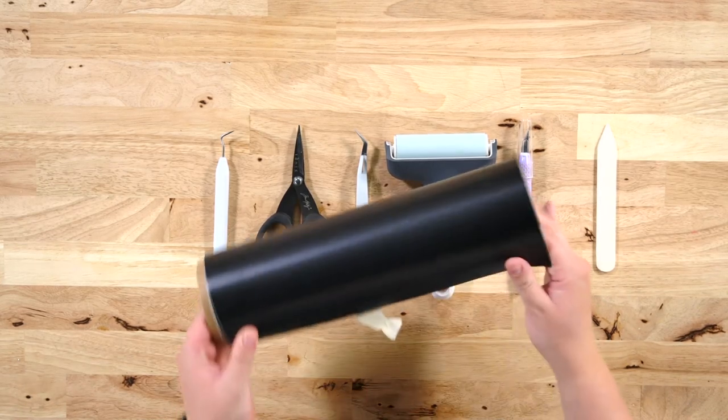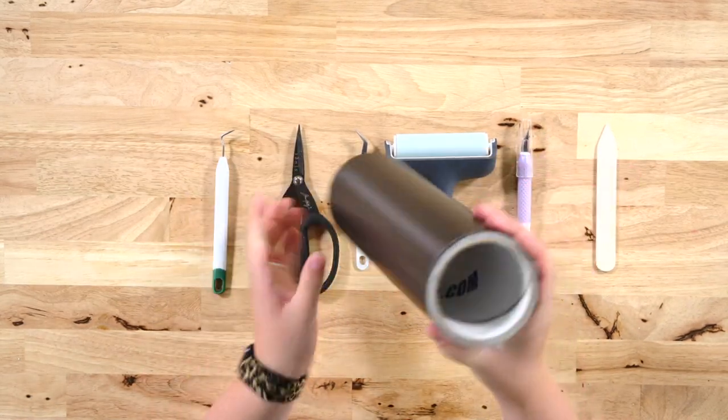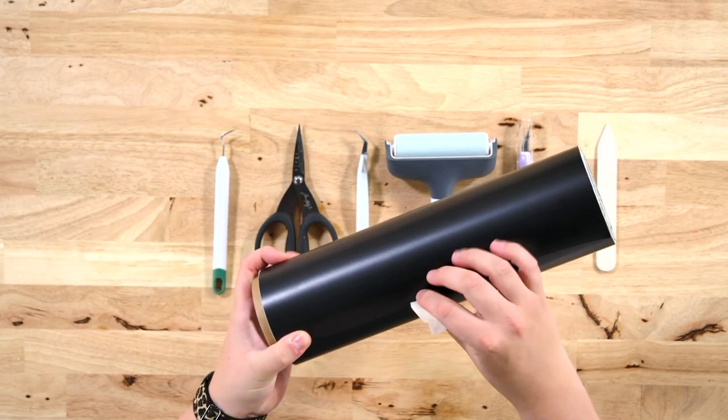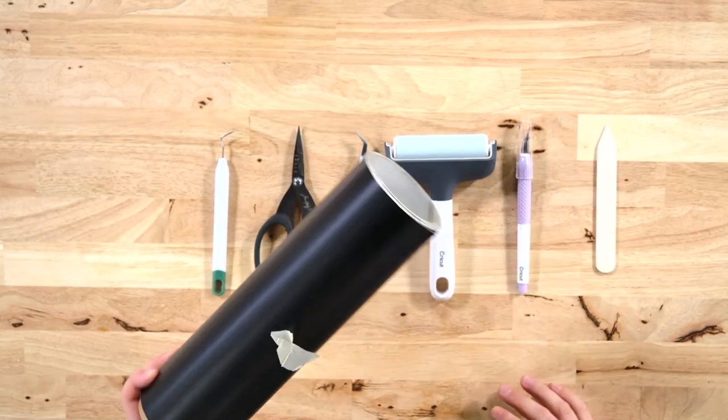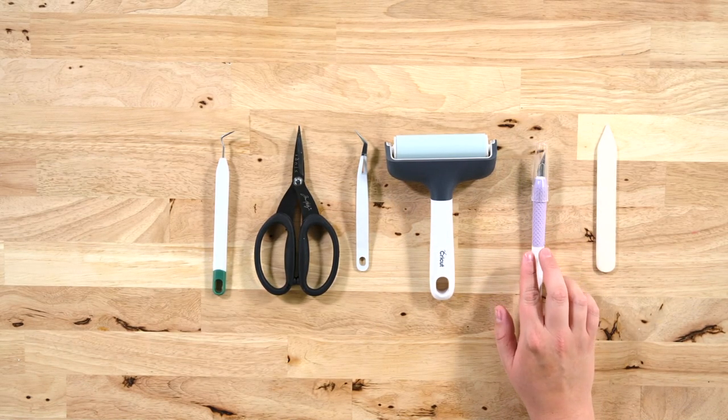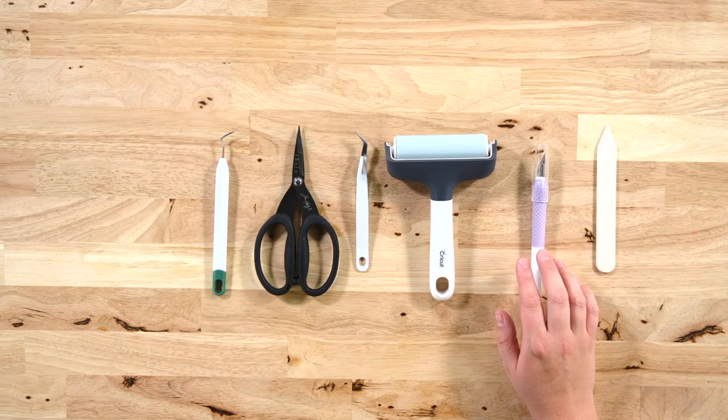Our bulk rolls of vinyl are not very big as you can see and they don't take up a lot of space. We love our bulk rolls. We get these off of 143vinyl.com. If you're interested, we love those. So we use the true control knife to cut off our vinyl from the roll a lot.